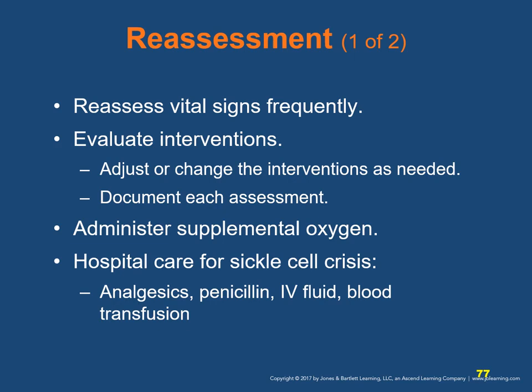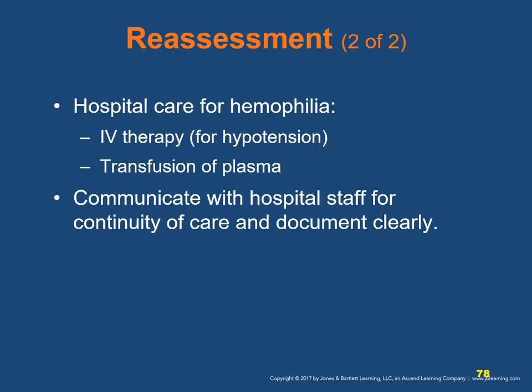Hospital care for sickle cell crisis may include analgesics for pain, penicillin to treat infection, IV fluids for hydration, and blood transfusion depending on severity. Hospital care for hemophilia may include IV therapy for hypotension and transfusion of plasma. Communicate with hospital staff for continuity of care and document clearly.